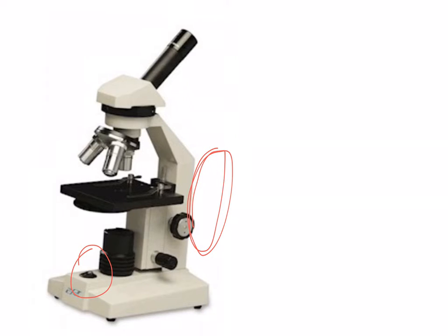Before you start, make sure the microscope is in the correct condition: the stage should be in the very bottom position and the low power objective should be clicked into position. Place your microscope slide on the stage, then use the coarse adjustment knob — the larger knob — to focus the image. Then use the fine adjustment knob to sharpen the image. When going from low power to medium power, rotate the revolving nosepiece and use the coarse then fine adjustment knob as needed. When going from medium power to high power, never use the coarse adjustment knob, as it can potentially break the slide and damage the lens.